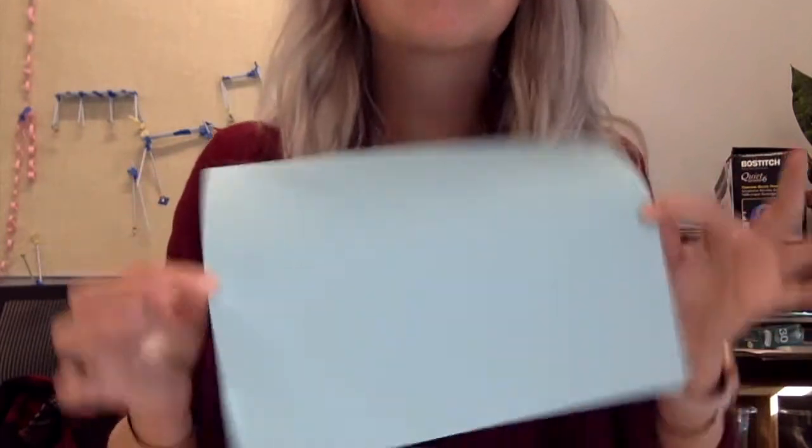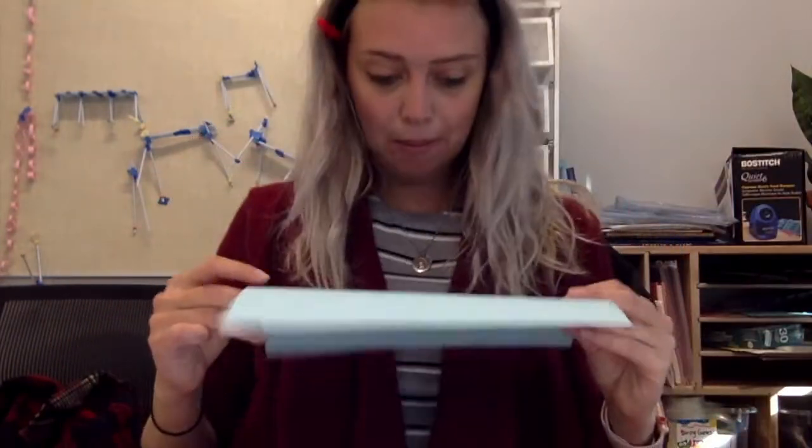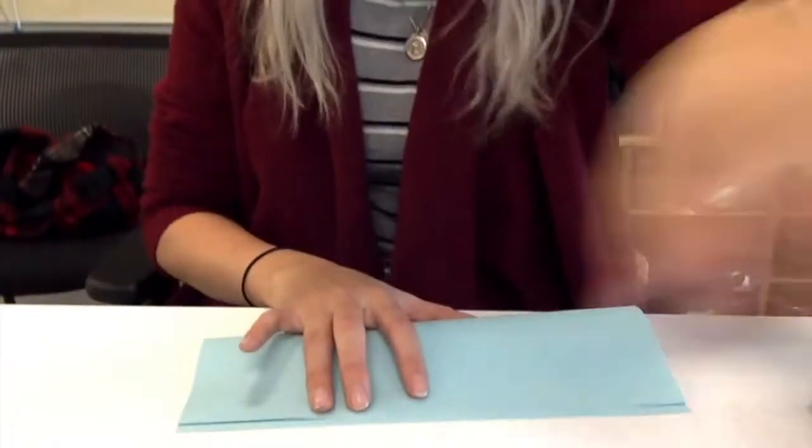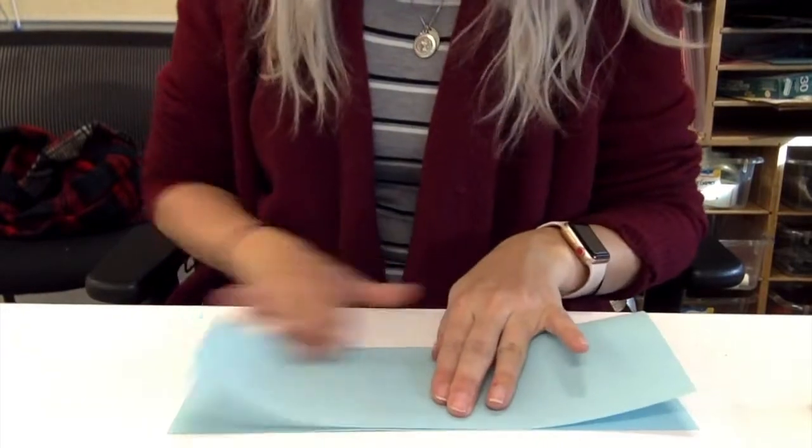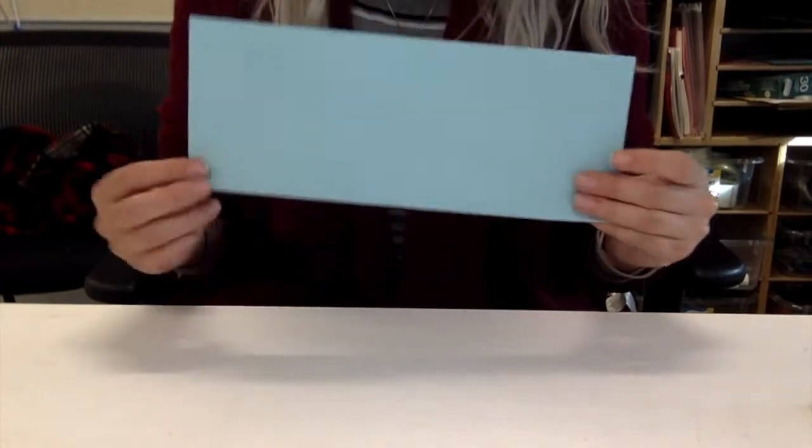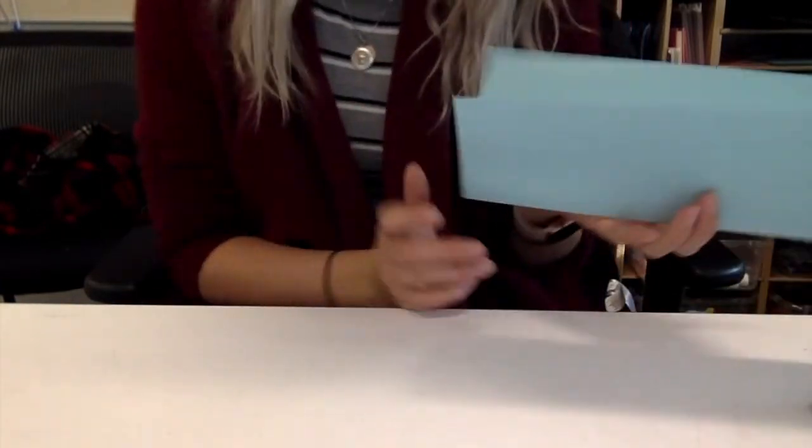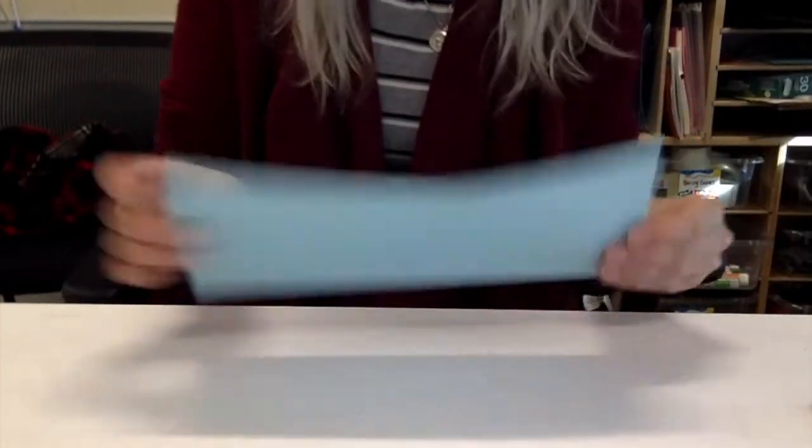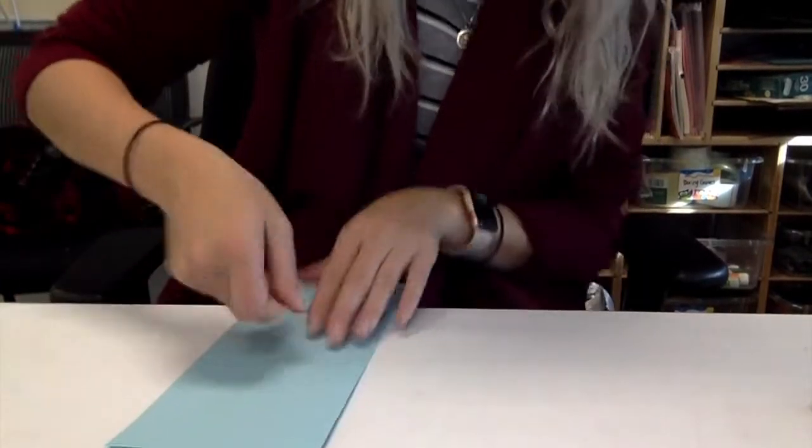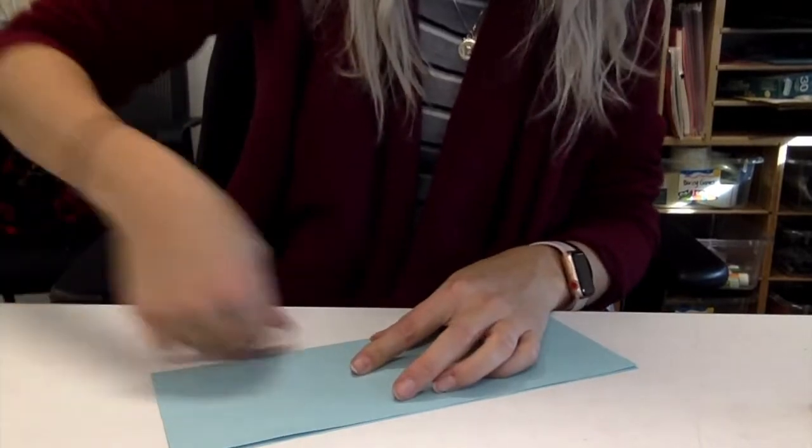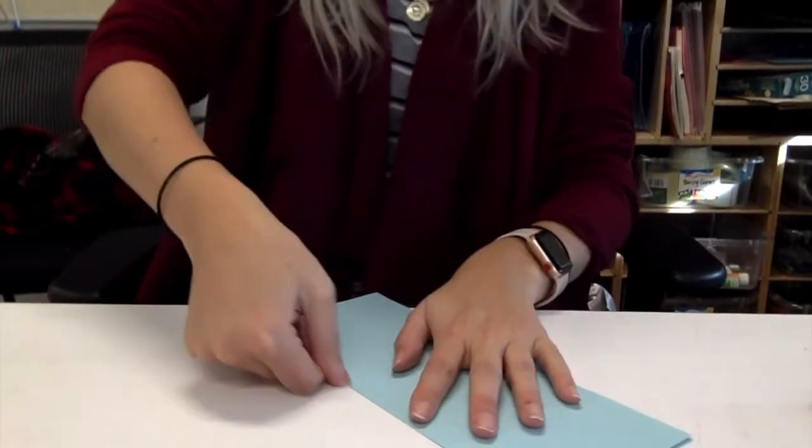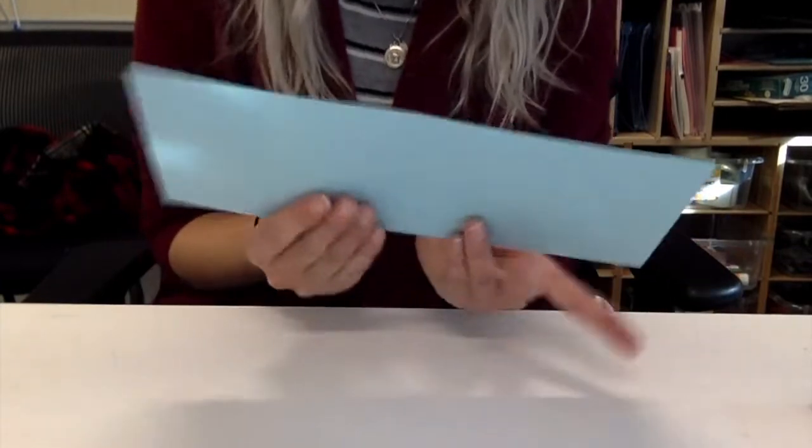You need a piece of paper, just a regular sized piece of paper. First, you're going to fold it like a hot dog, so folding it the long way like a hot dog bun. Make sure you're creasing the edges really carefully.